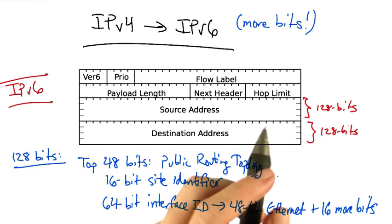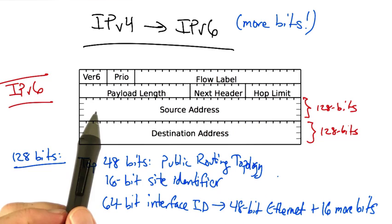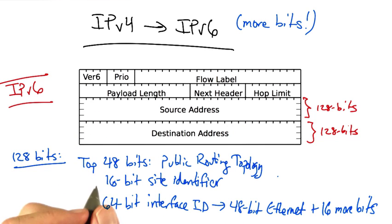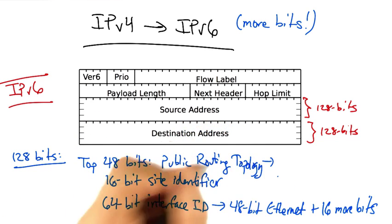And finally, a 64-bit interface ID, which effectively has the 48-bit Ethernet address of the interface plus 16 more bits.